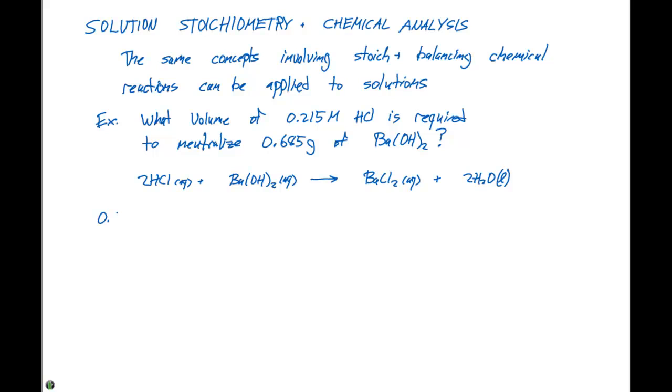We'll start with our given quantity which is 0.685 grams of Ba(OH)2. We know from the periodic table that 1 mole of Ba(OH)2 is equal to 171.34 grams of barium hydroxide. From our balanced chemical equation, for every 1 mole of Ba(OH)2, we need 2 moles of HCl in order to neutralize this.